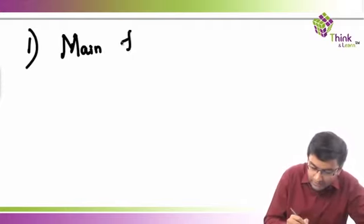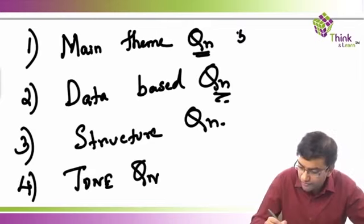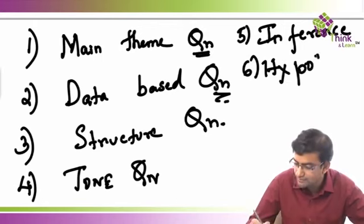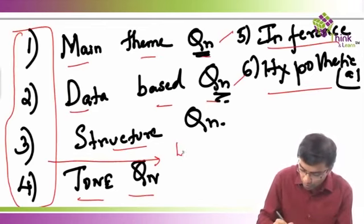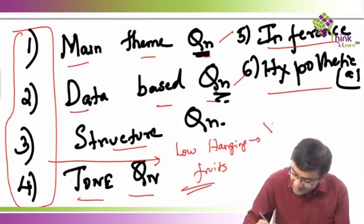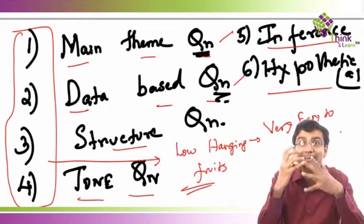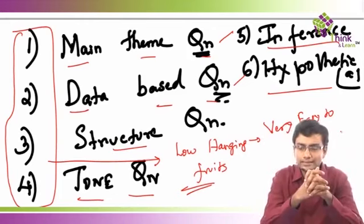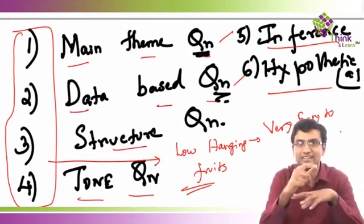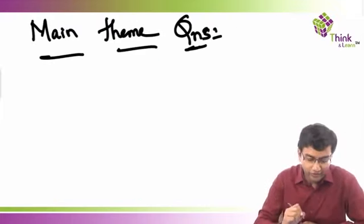There are fundamentally six types of questions in RCs. The first category is the main theme question, the second is the database question, the third is structure questions, the fourth is tone questions, the fifth is inference, and the sixth is hypothetical questions. These first four categories are what I call low hanging fruits — they are very easy to solve. For many of these questions, you don't even have to understand the passage to get the answer. I will also teach you how to verify the answer after you pick it. These are questions you must attempt at any cost.